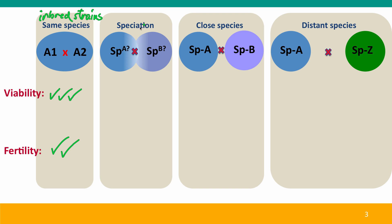Now, when we consider hybridization at the level of speciation, what we're looking at is individuals from two populations that maybe are on their way to becoming different species. Under these circumstances, typically the viability of the hybrids may be as high as the parents, maybe a bit less, and the same for fertility. Between close species, hybrids are not always viable. When they are, these are species that humans have often exploited. Sometimes they're viable, sometimes they're not, but when they're viable they're not fertile.